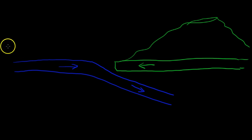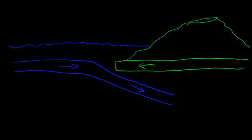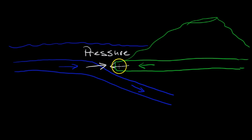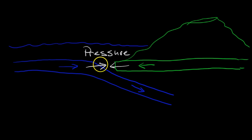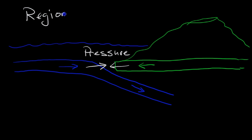Sometimes it's a shoreline — here's an ocean, here's an oceanic plate, here's a continental plate. And we have these two plates crashing into each other, and that causes an extreme amount of pressure. So anytime you have an area where two plates collide, at shorelines and near large mountains, we have an extreme amount of pressure creating different types of metamorphic rock. This type of creation is called regional metamorphism.